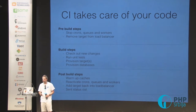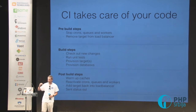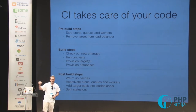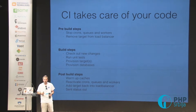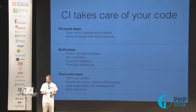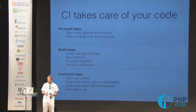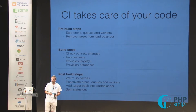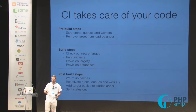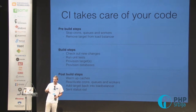One of the scenarios we use is a pre-build step: we stop the cron queues and workers, we remove our target from the load balancer. Then we have our build steps — with PHP we don't actually build, but we use the term. We check out the new changes, run our tests, provision the target, and provision the databases. Then the post-build step: we warm up the caches, reactivate the crons, queues, and workers, and put the target back in. These are the manual steps that most developers do when they have a release event — now the system takes care of exactly the same thing, and we deploy immediately.